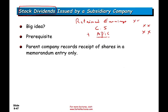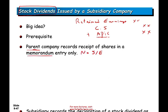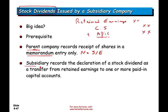When the subsidiary issues a stock dividend, the parent company records the receipt of shares in a memorandum entry only — there is no journal entry for the parent company. The subsidiary records the declaration of a stock dividend as a transfer from retained earnings to one or more paid-in capital accounts. Retained earnings goes down; capital stock and additional paid-in capital goes up. Basically, you are capitalizing some of your earnings — taking earnings out of retained earnings and increasing capital stock.